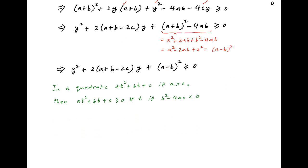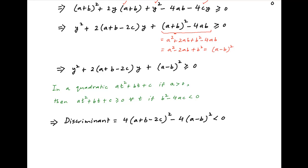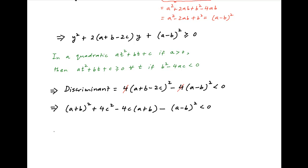Therefore the above inequality holds for all y if the discriminant is less than 0. The discriminant equals 4(a + b - 2c)² - 4(a - b)², and this must be less than 0. Cancelling the 4 and expanding, we get (a + b)² + 4c² - 4c(a + b) - (a - b)² < 0, which can be written as 4c² - 4c(a + b) + (a + b)² - (a - b)² < 0.